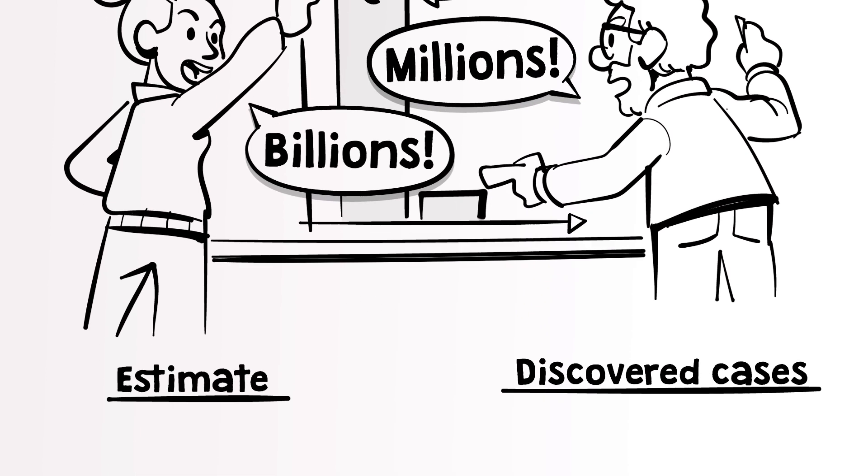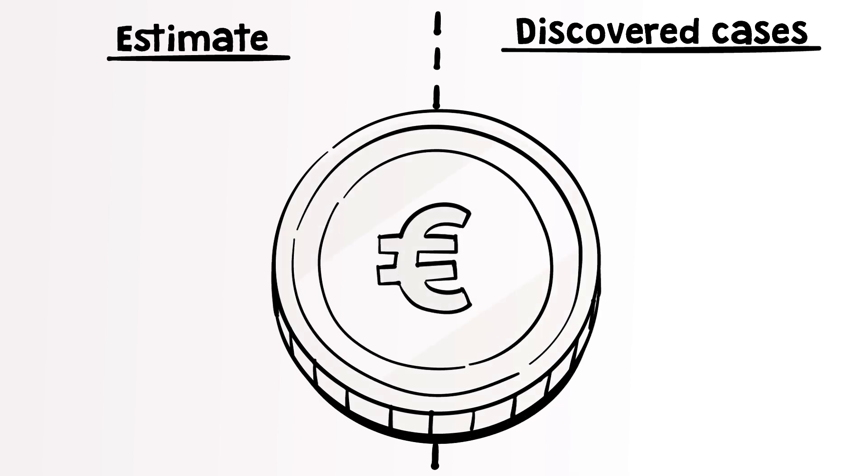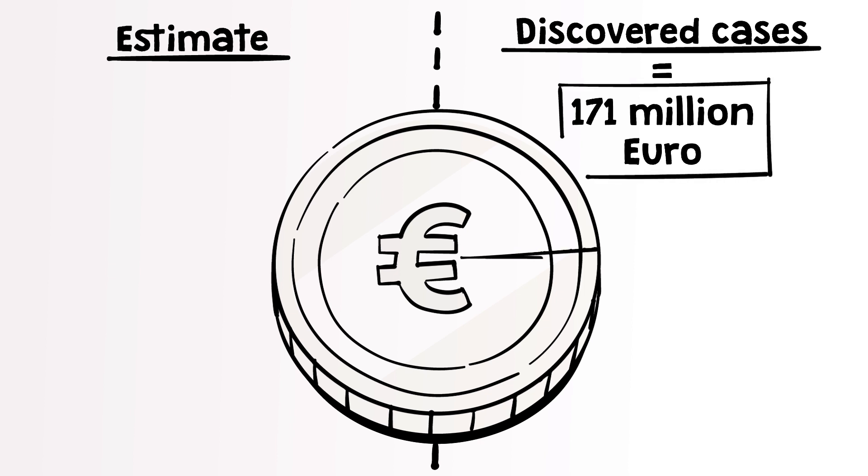This difference mostly comes from the information one uses to estimate the amount. If you look at discovered cases, and for instance how many criminal assets were confiscated by the Dutch police, one would see only millions, with the most recent estimate being 171 million, only about 1% of 16 billion.